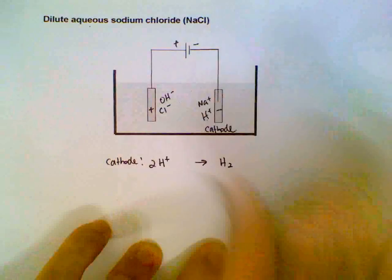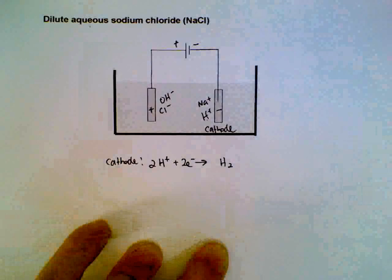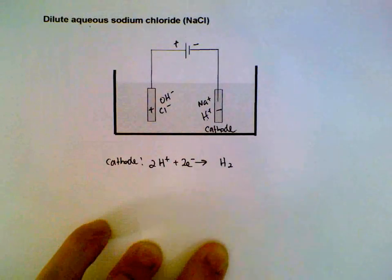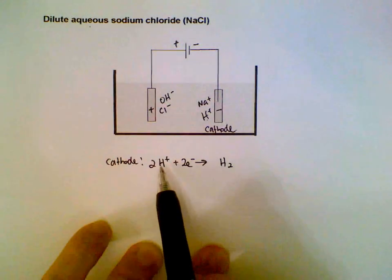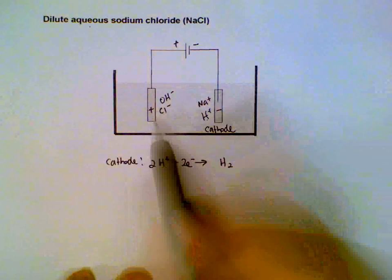Balance it out: 2H+ need to gain 2 electrons. So hydrogen ions are being reduced at the cathode: 2H+ + 2e- → H₂.